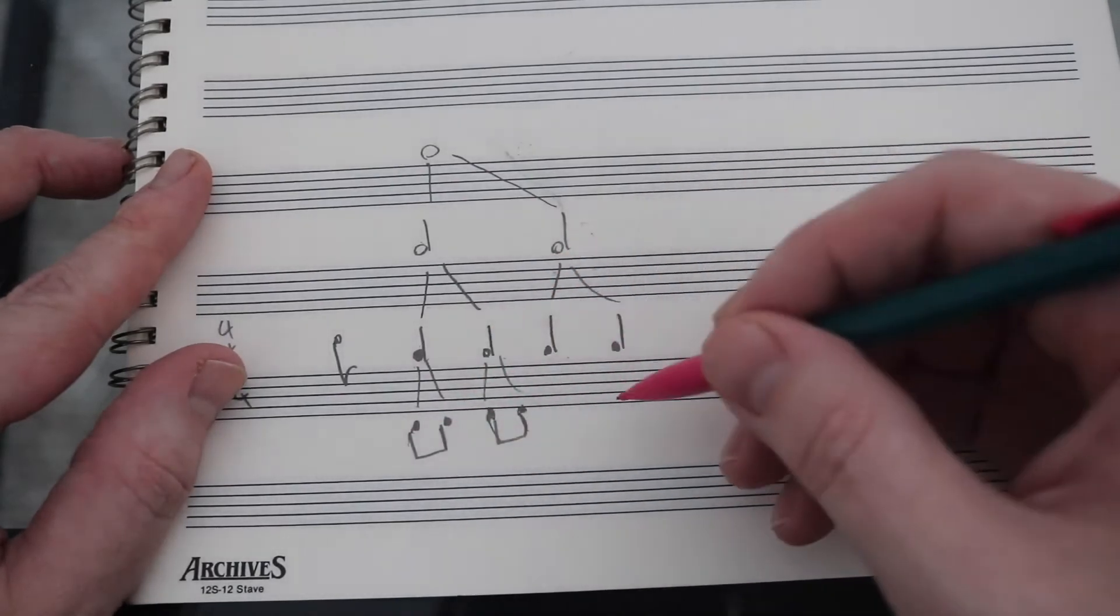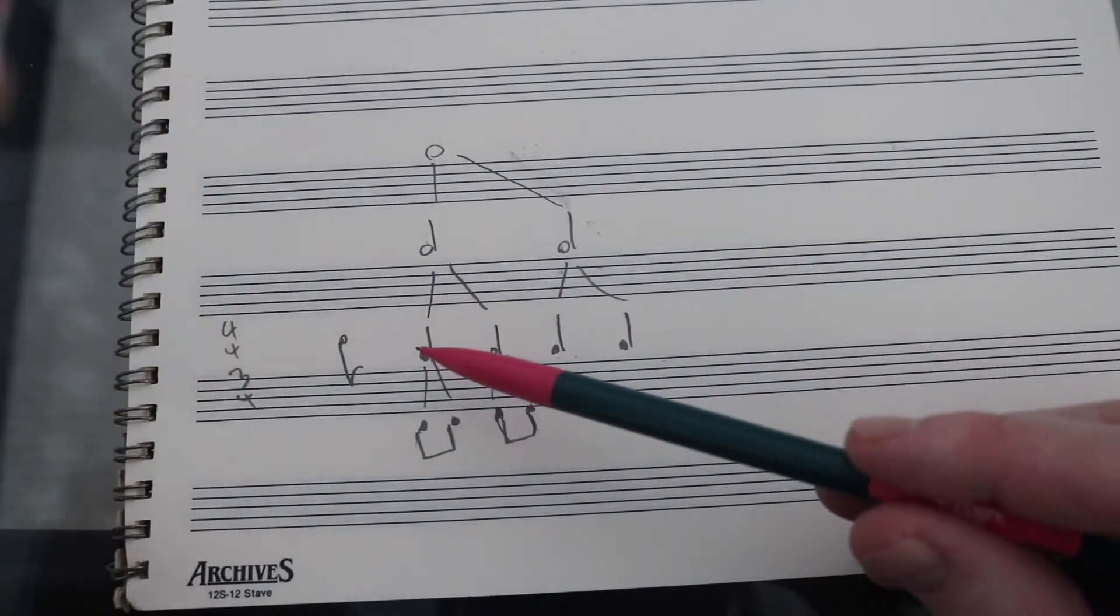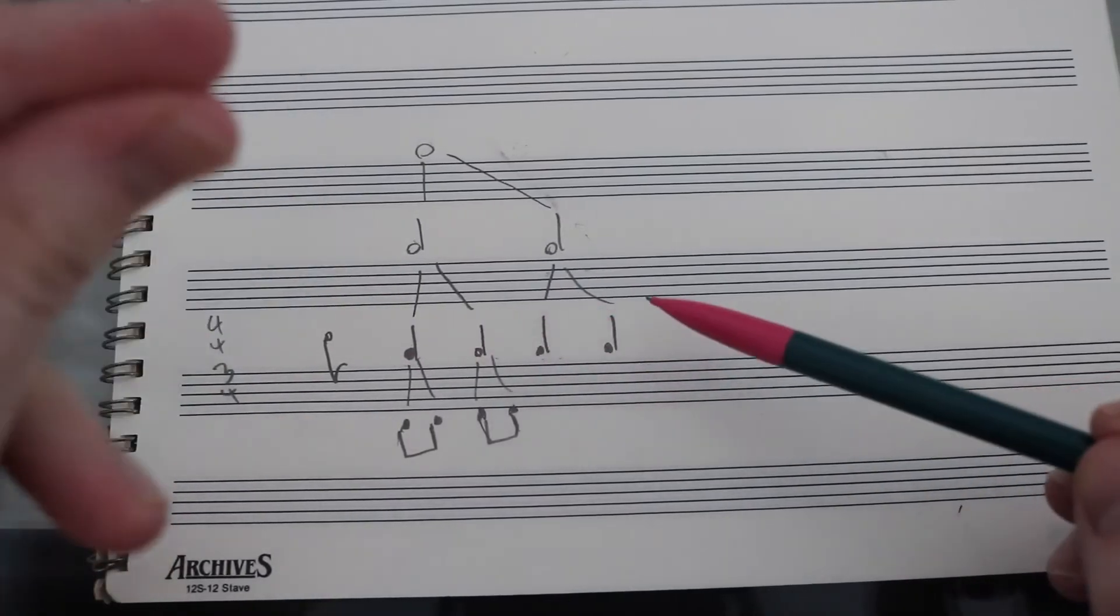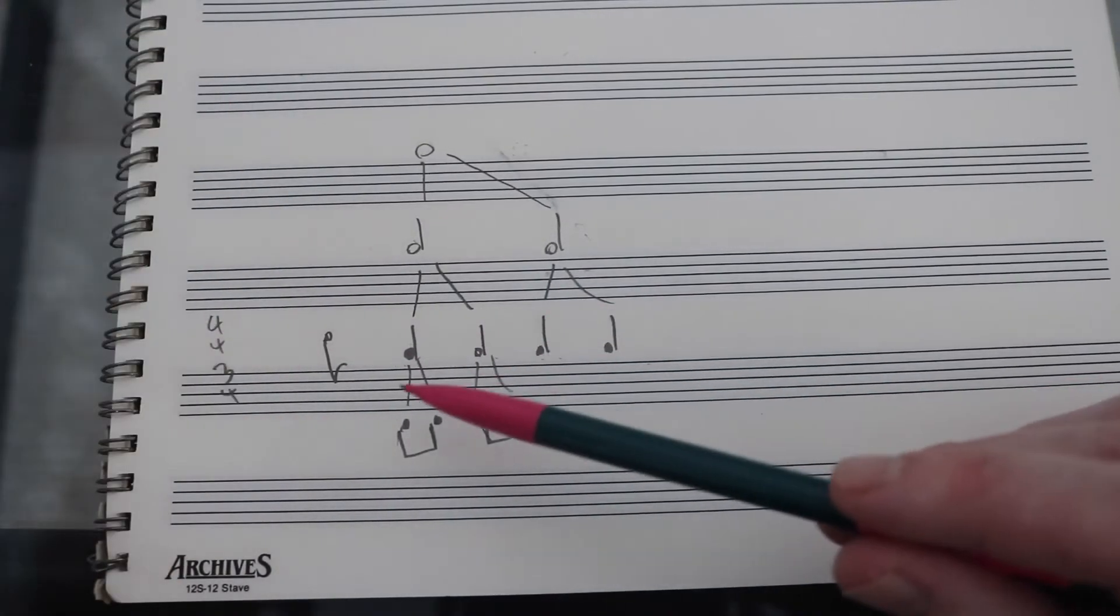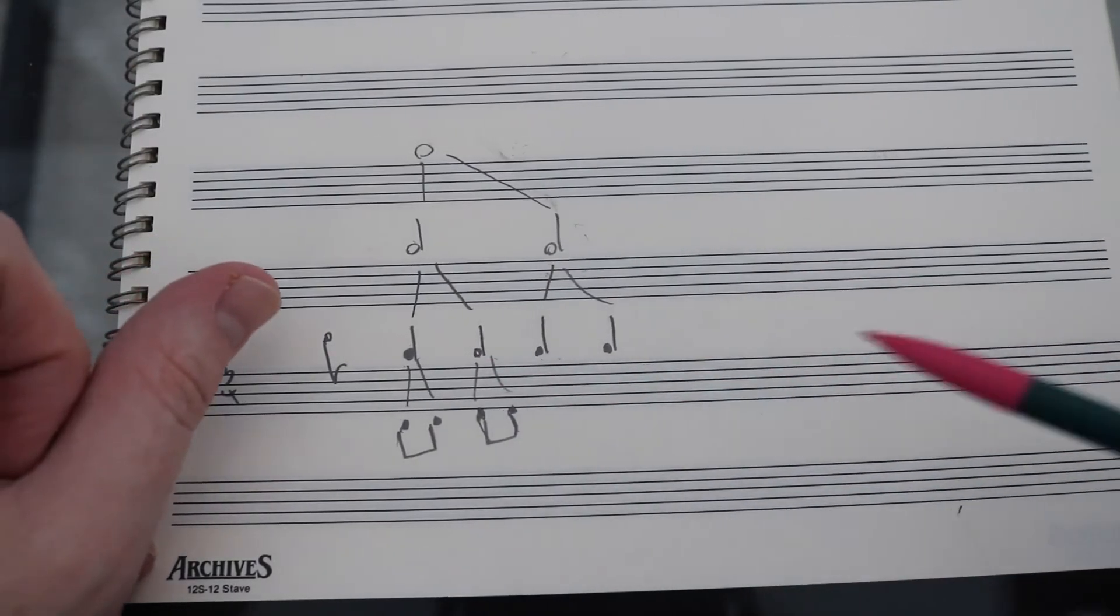And this is half of a beat. So, how would we count that? Well, instead of saying for the quarter notes, one, two, three, four, we would say it like this: one and two and three and four and, et cetera. I didn't write them all out, but you get the idea now.